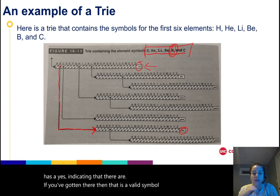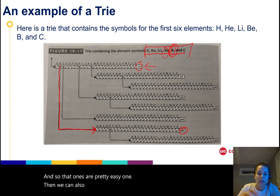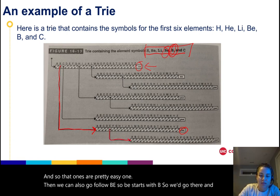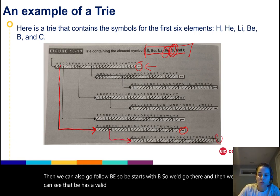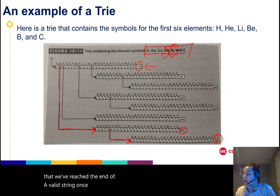That one's a pretty easy one. Then we can also go follow BE. So BE starts with B, so we'd go there, and then we can see that BE has a valid pointer as well. We get another 'yes,' meaning that we've reached the end of a valid string once we've arrived there.